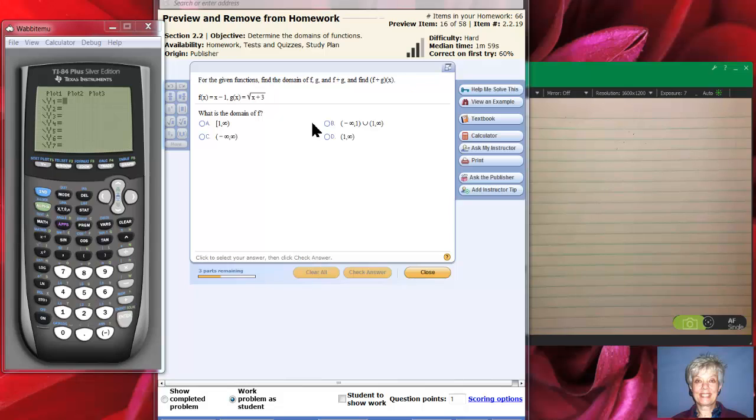We're being asked first here what is the domain of f, and f of x is x minus 1. That's a straight line. Its domain is going to be negative infinity to positive infinity.